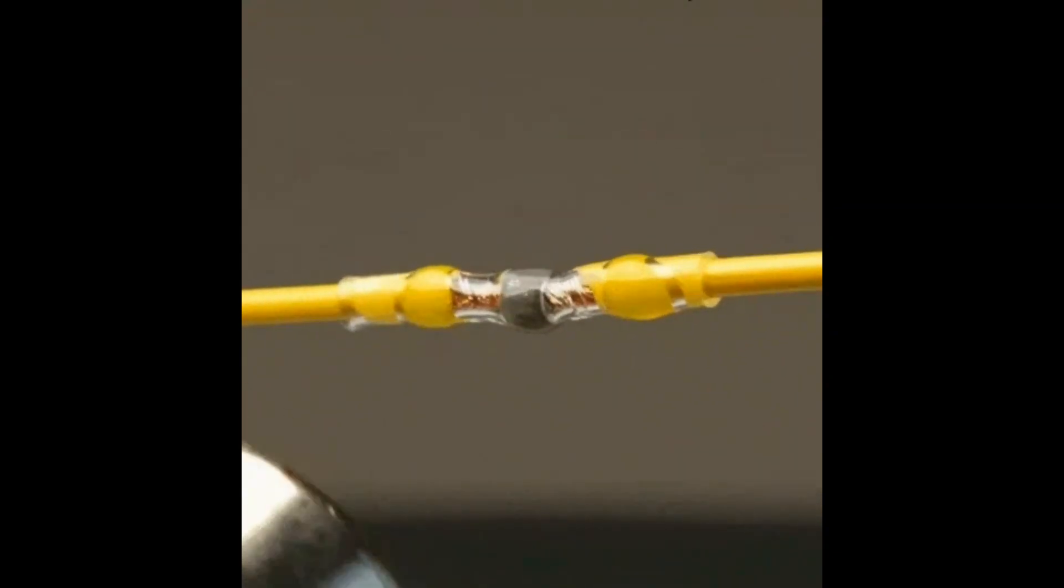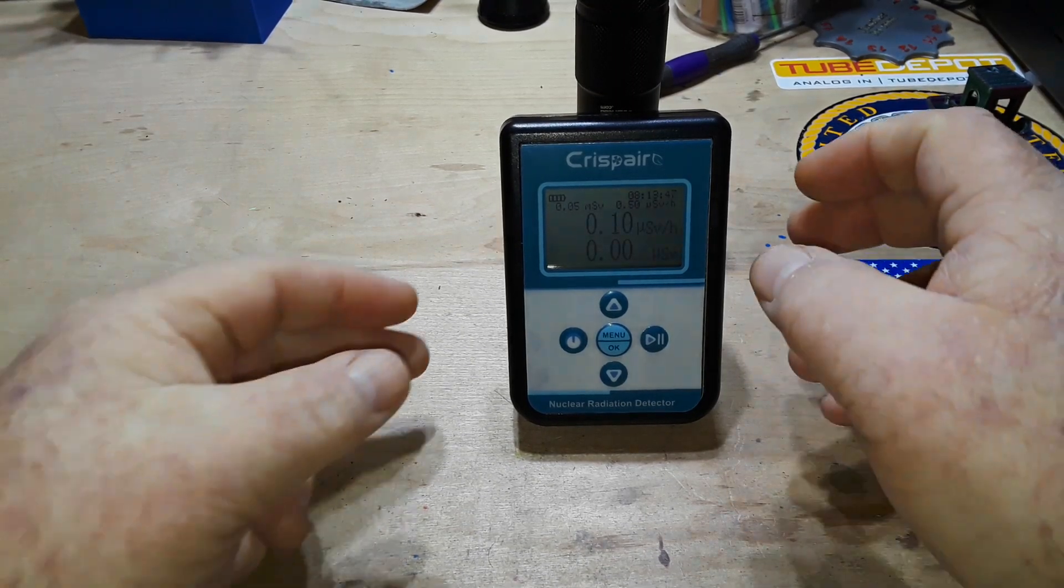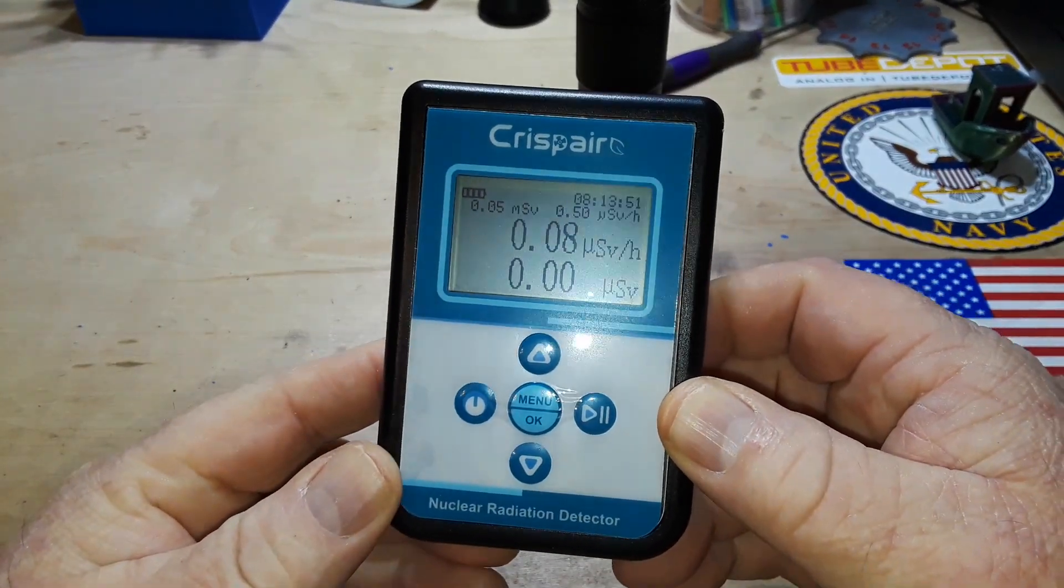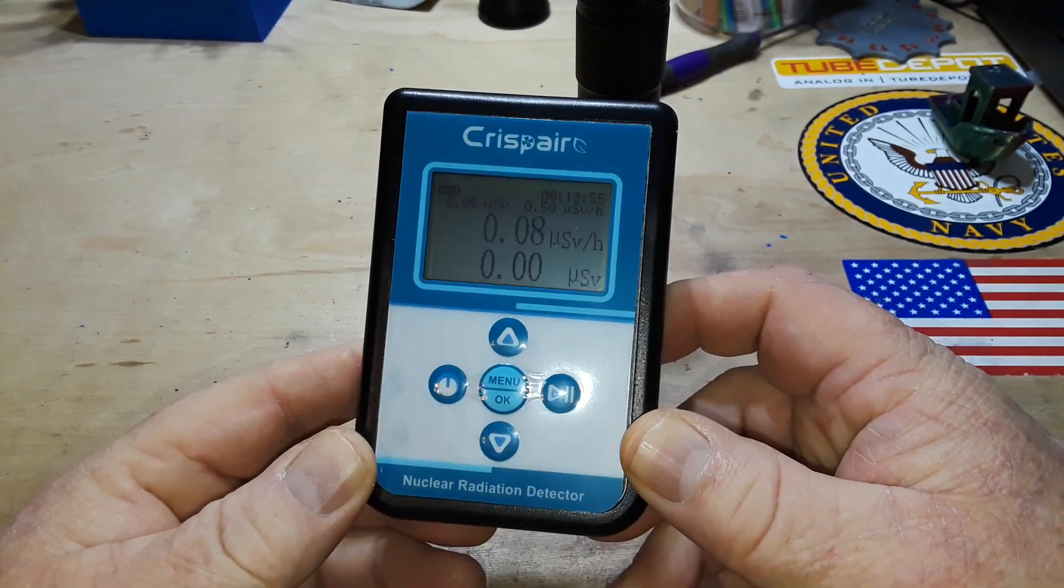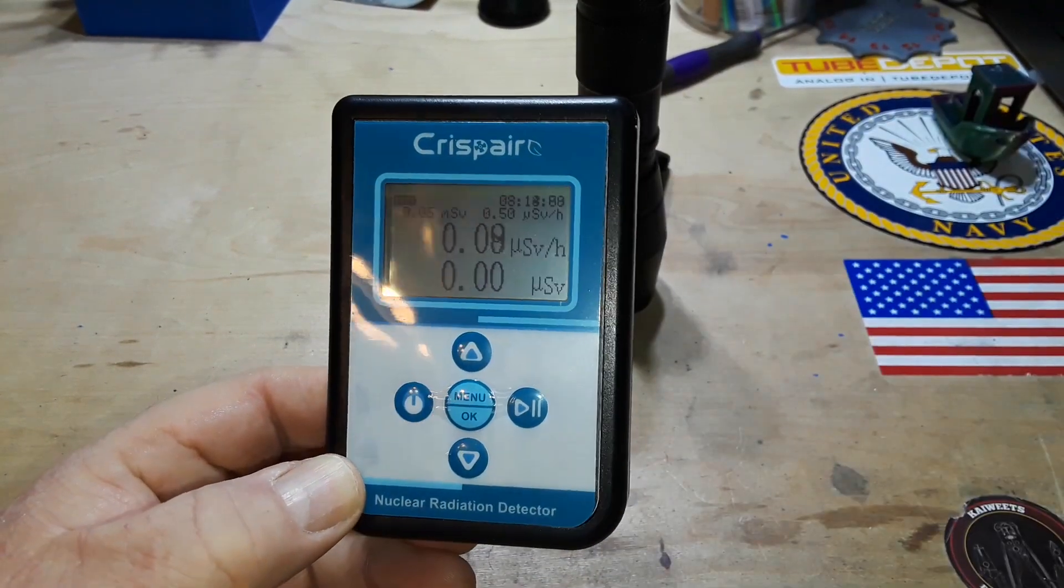This video has been sponsored by SolderStick. More on that at the end. Hey, what's happening guys? Today I'm taking a look at this really low-cost little Geiger counter. I got it off of Amazon for $25. Thank you, patrons.